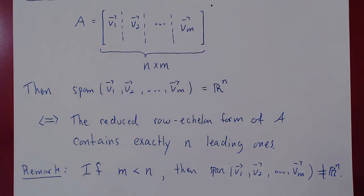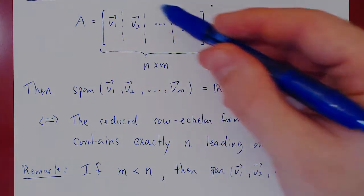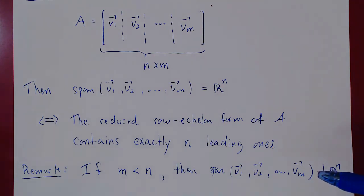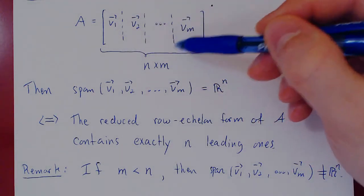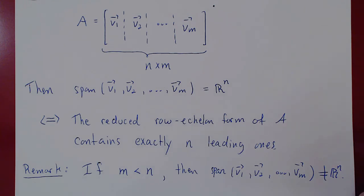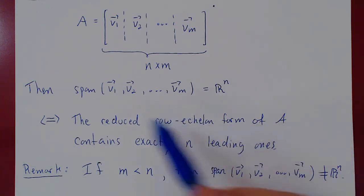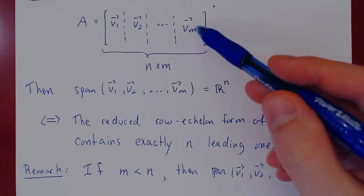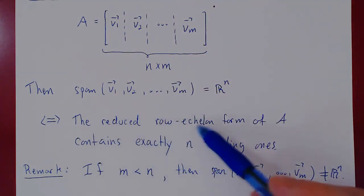Finally, connecting back to the previous video on linear independence: both linear dependence/independence and whether vectors span Rn are answered by building the matrix with the vectors as columns and row reducing it. Counting the leading ones simultaneously tells you about linear dependence and whether the span is all of Rn. We've boiled both new concepts down to the familiar process of row reduction.